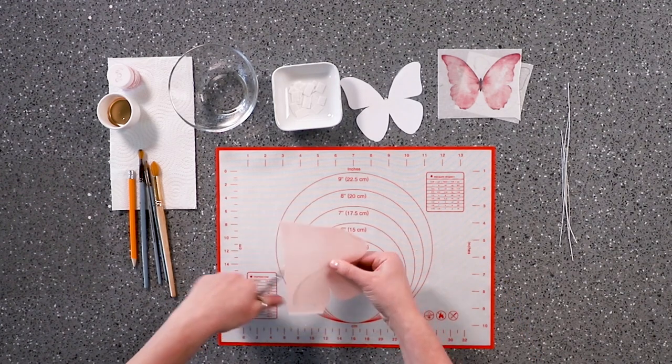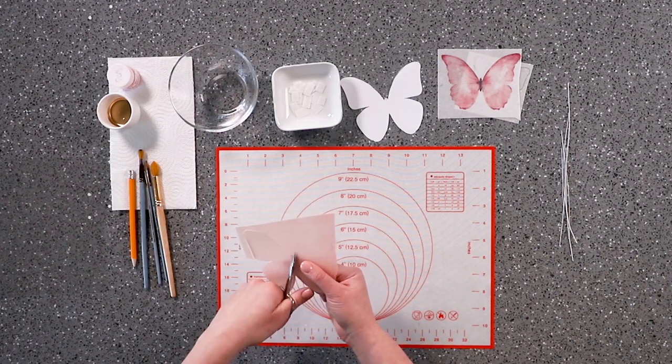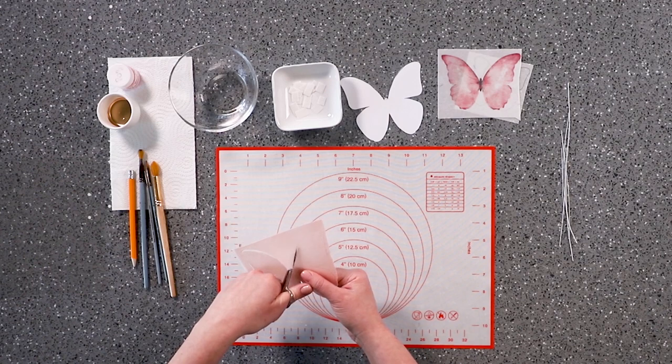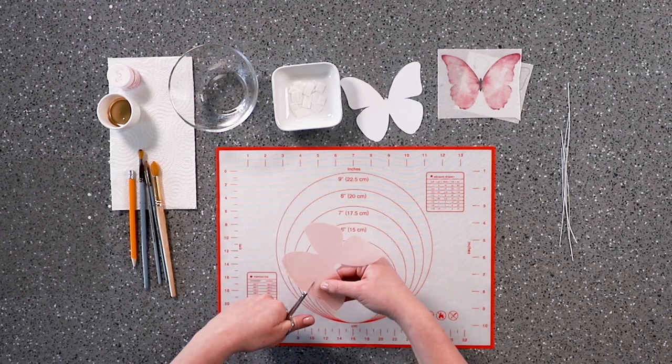We printed a pink background on wafer paper, made a butterfly using a template and cut it out. It must be cut very carefully since the paper is very fragile.